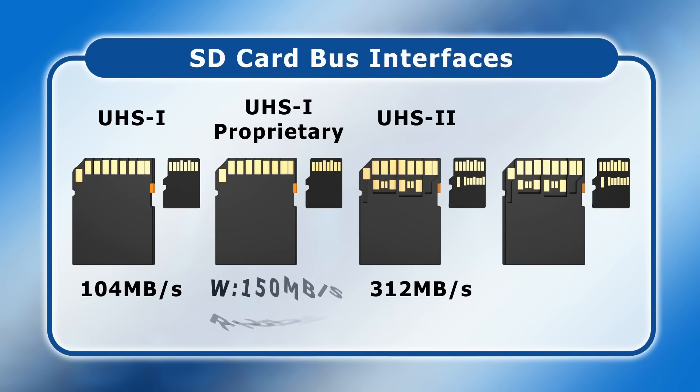These proprietary technologies can allow write speeds of up to 150 megabytes a second and read speeds of up to 250 megabytes a second, using just the one standard row of pins. SanDisk calls this technology Quickflow, and whilst no cameras or other recording hardware write data using this standard, Quickflow SD card readers greatly speed up the transfer of data from a compatible UHS-1 card — and we'll be testing one out in the next part of this video.